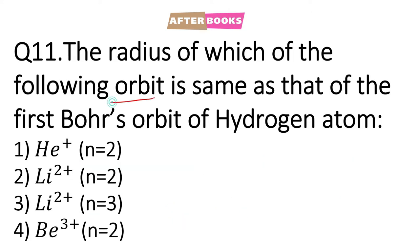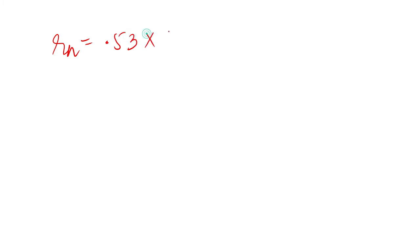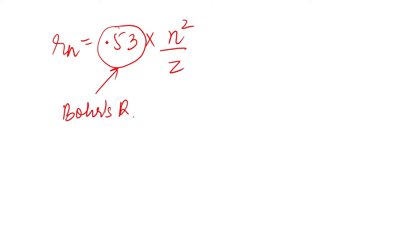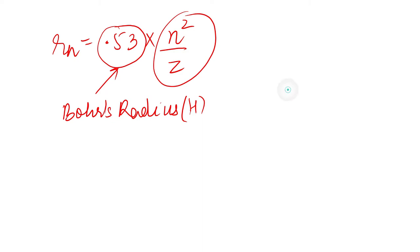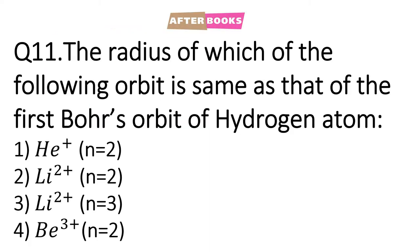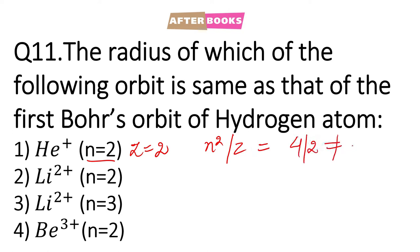Question number 11: Which orbit's radius will be equal to the first Bohr's orbit of hydrogen atom? The radius formula is 0.53 × n² / z. This value 0.53 is called Bohr's radius for hydrogen atom. So if n² / z equals 1, the radius equals 0.53. Considering option 1 — for helium, n = 2 and z = 2, so n²/z = 4/2, which is not equal to 1. Considering option 2 — n = 2, and for lithium z = 3, so n²/z = 4/3, which is again not equal to 1.